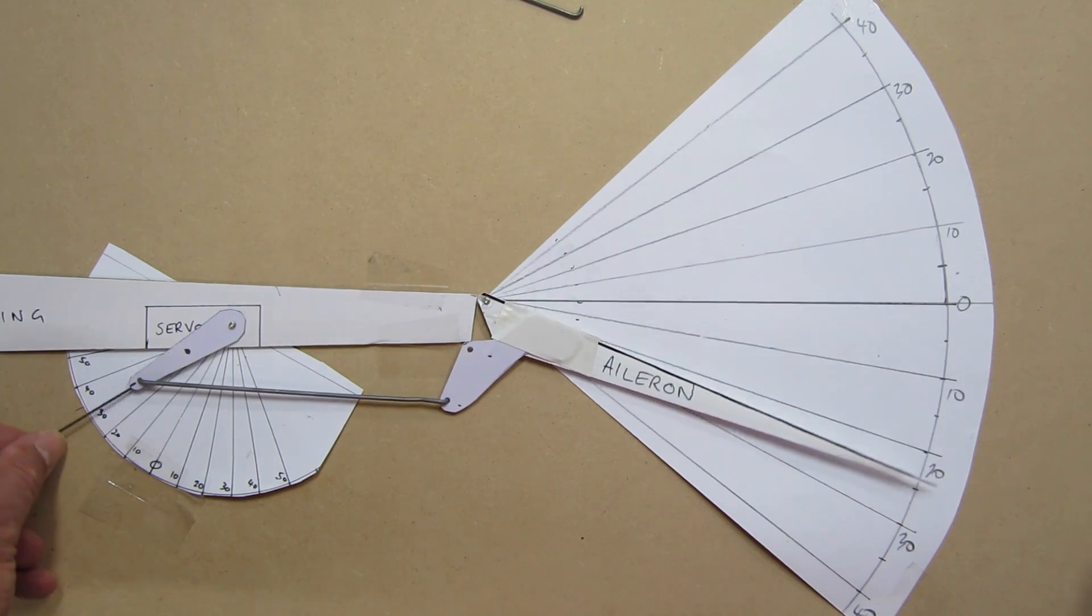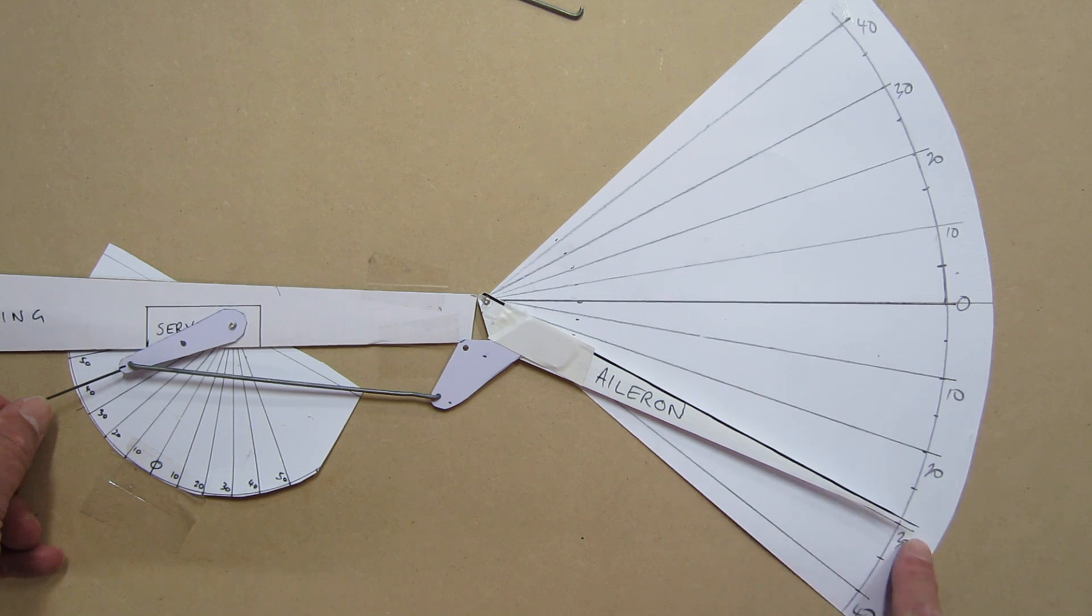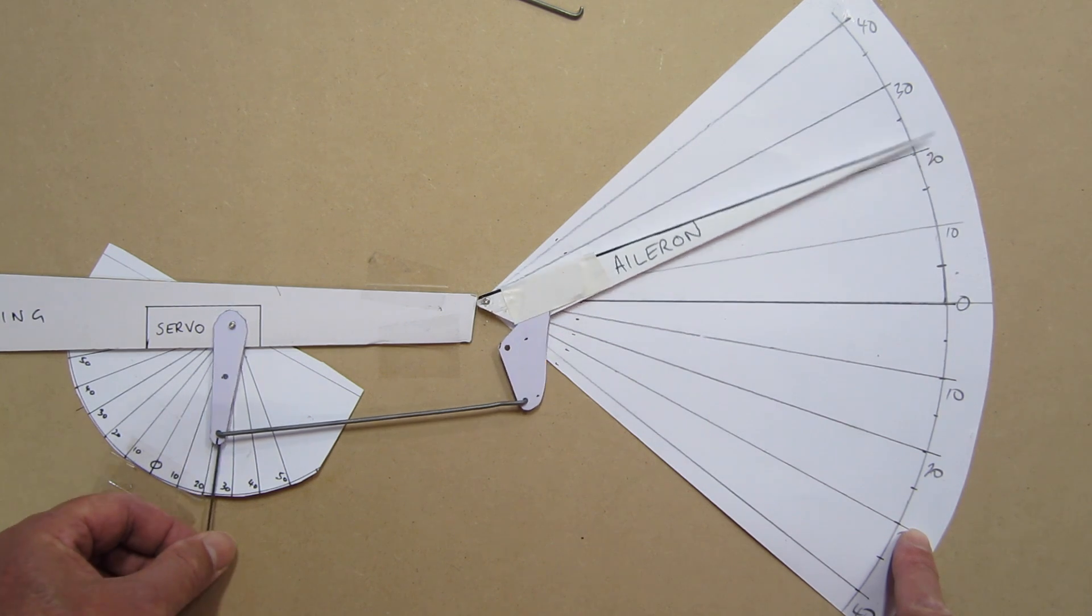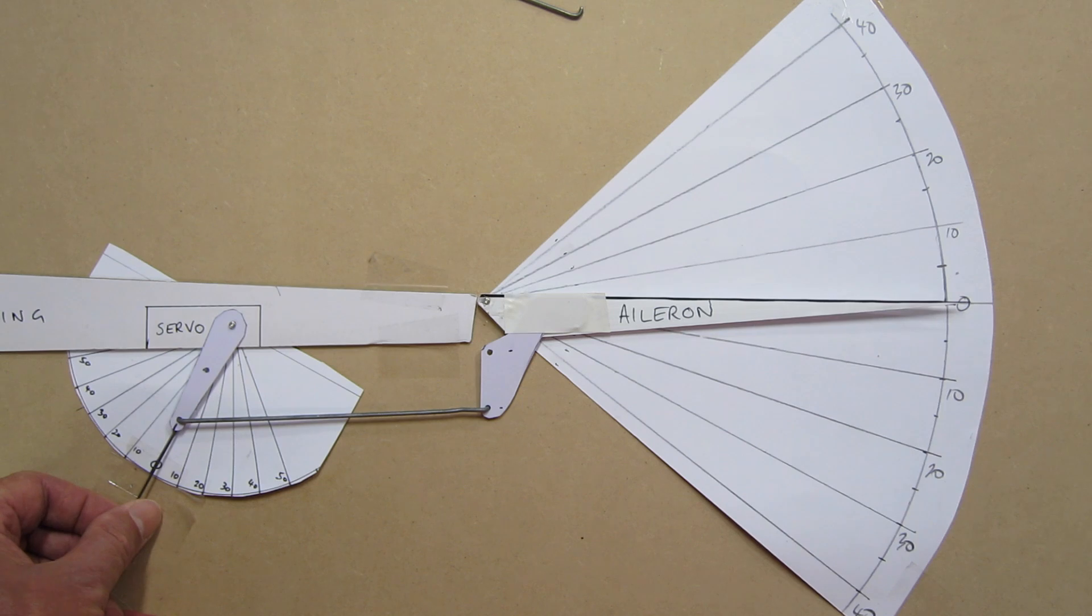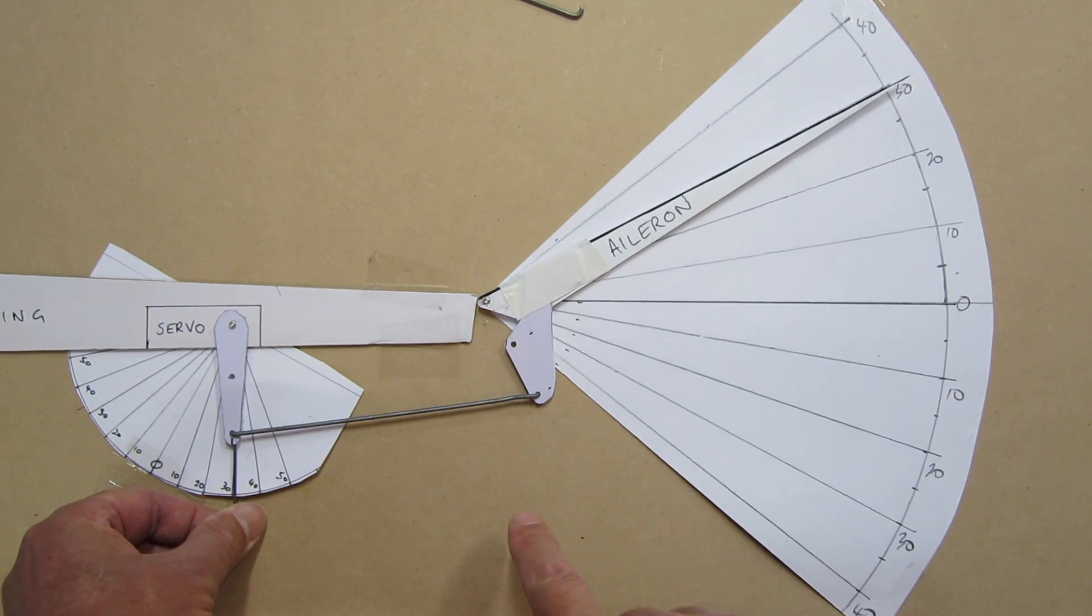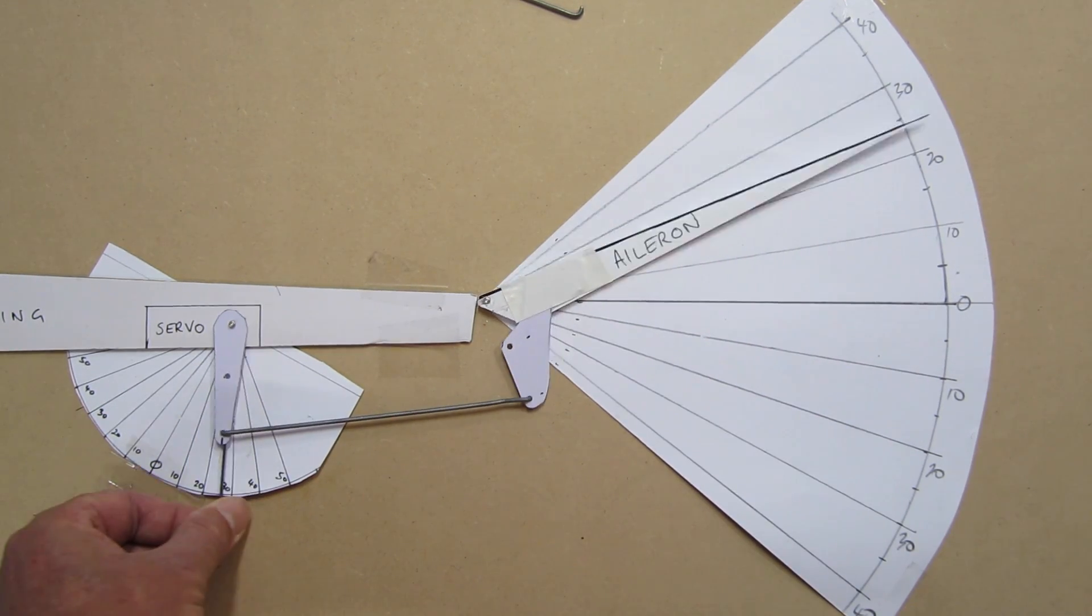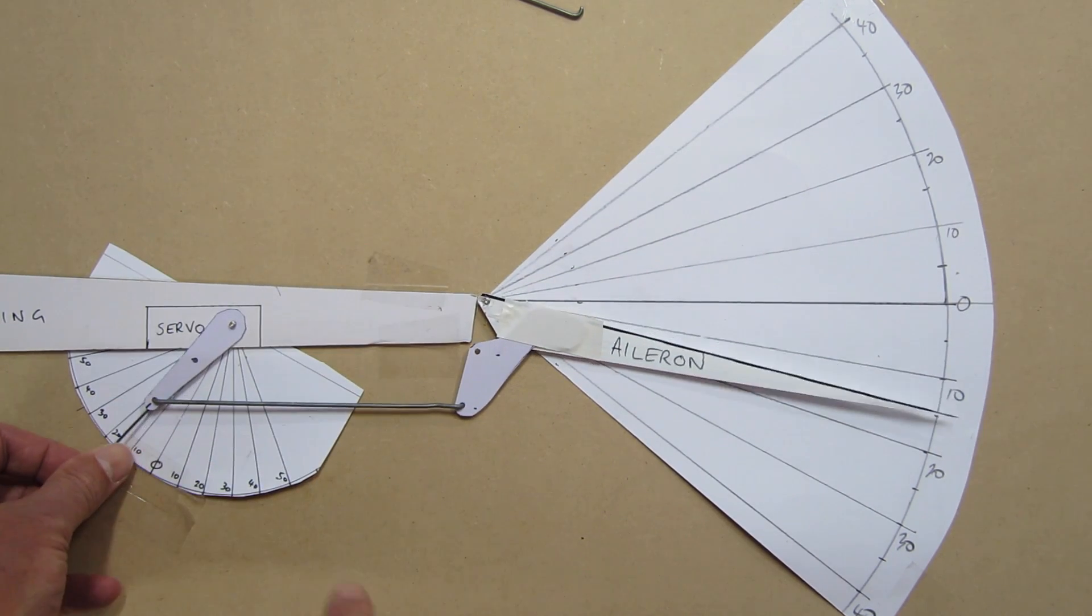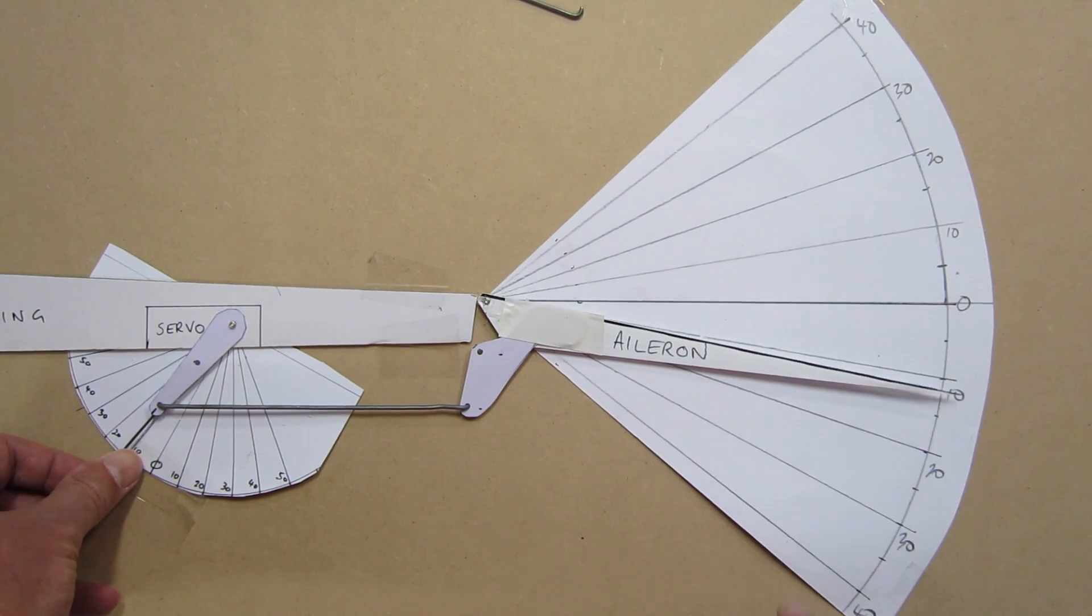So the servo's going forward 40 degrees, and the aileron's only going down to 30. The servo's going back 40 degrees, and the aileron goes up to 40 degrees. So that's introduced some differential. The servo gives most backwards and forwards movement to the push rod when it's in the vertical quadrant. When it's at an angle, part of the movement is up and down, not backwards and forwards. So you're getting less backwards and forwards movement of the push rod, which gives less deflection of the aileron.